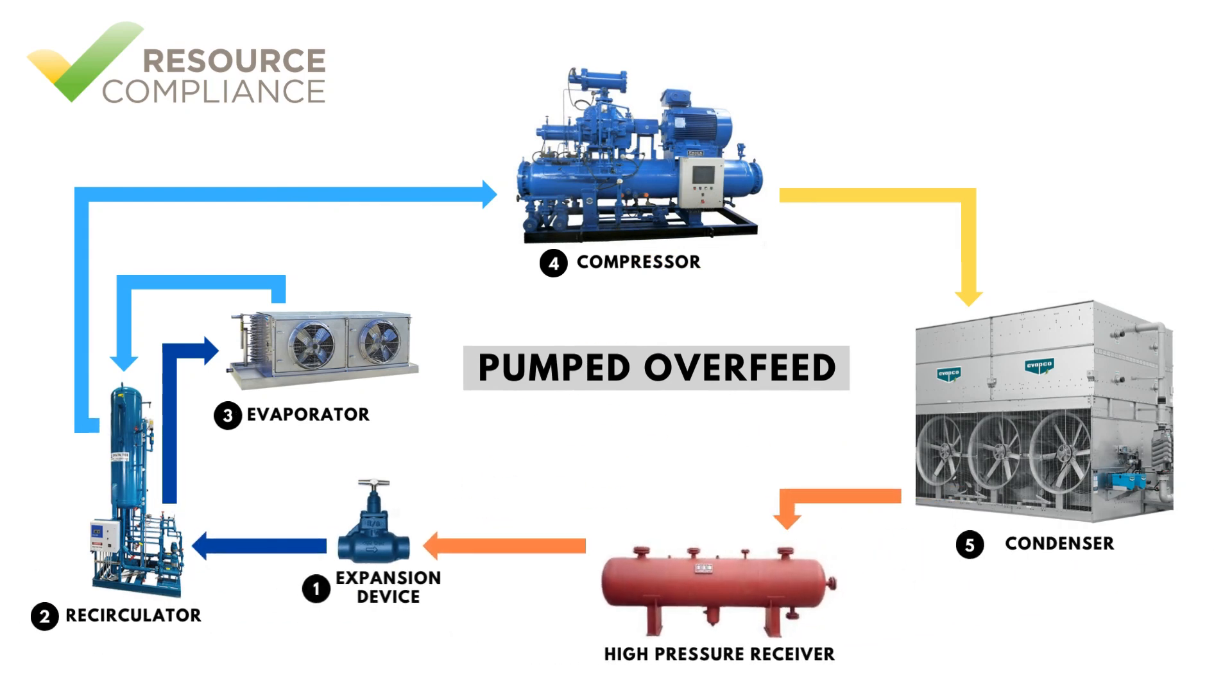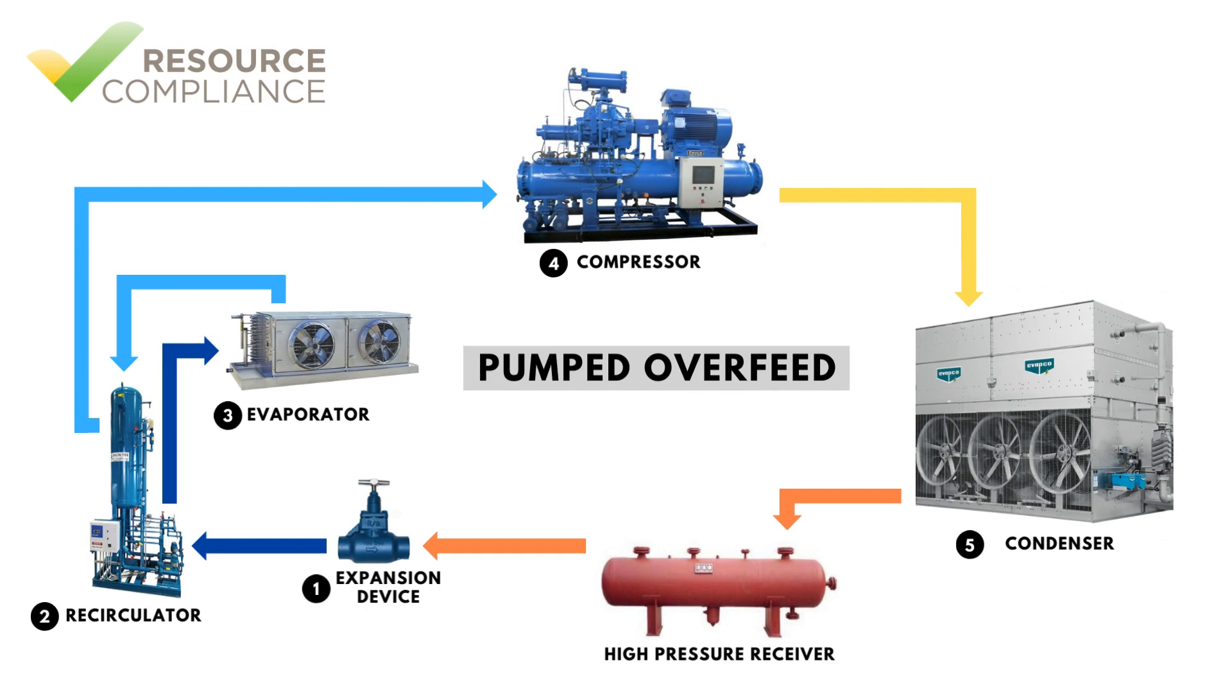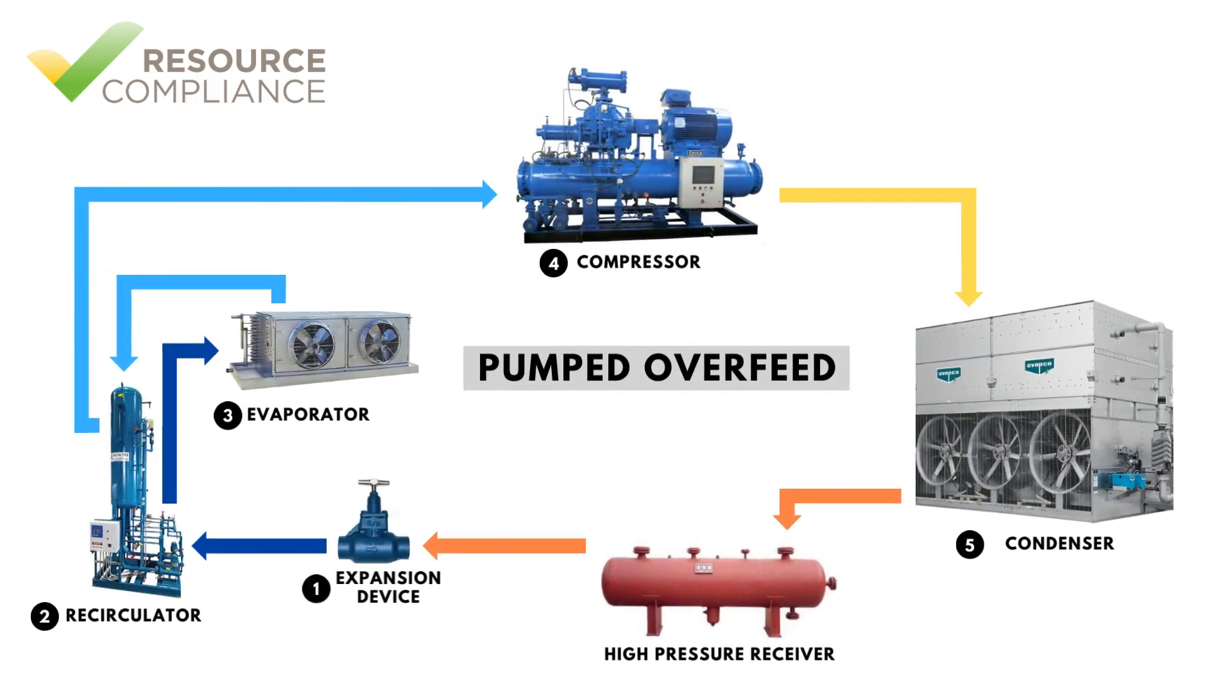A pumped overfeed or recirc system is similar to the gravity flooded system in that it utilizes a vessel that was not part of the DX system. In a pumped overfeed system, however, the vessel, often called a recirculator, is not located above the evaporator.